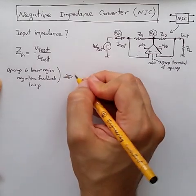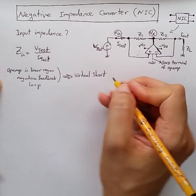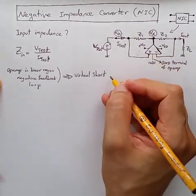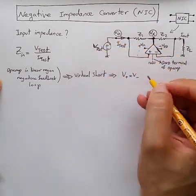From here, we know that virtual short should hold, meaning that the voltage of positive and negative terminal should be equal to each other, and should be equal to V-test.